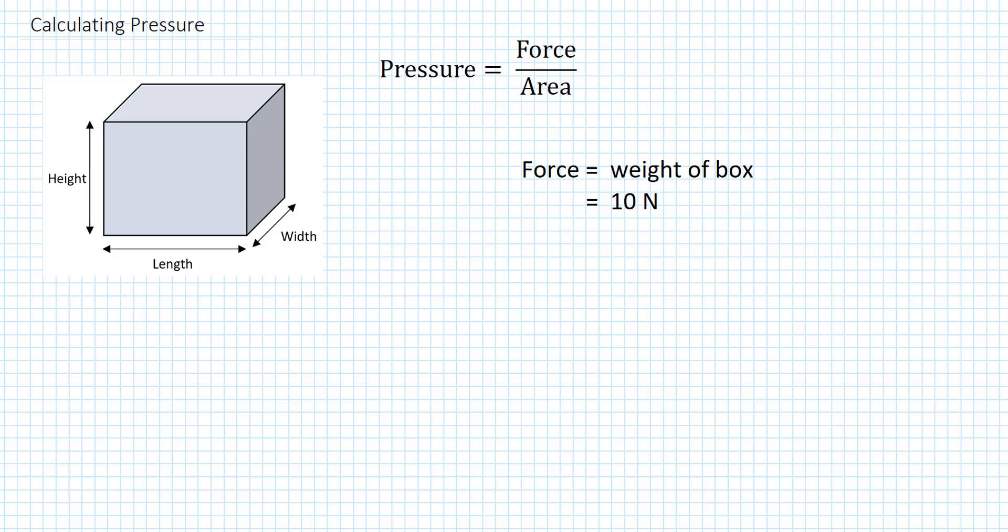Now we need the area. The area of the bottom of the box is the same as the area of the top of the box. It's just the length times the width. And because this box is a cube, the length and the width are the same. So 0.2 meters times 0.2 meters is 0.04 square meters.